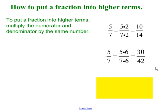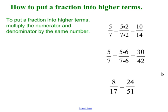Notice that I am not multiplying by 6, because that would make the fraction bigger. I'm multiplying by 6 over 6, which is equal to 1. The final example is 8 seventeenths. To put this into higher terms, I'm multiplying by 3 over 3, and we get 24 over 51. There is no such thing as highest terms, because I can keep making the numbers bigger and bigger.